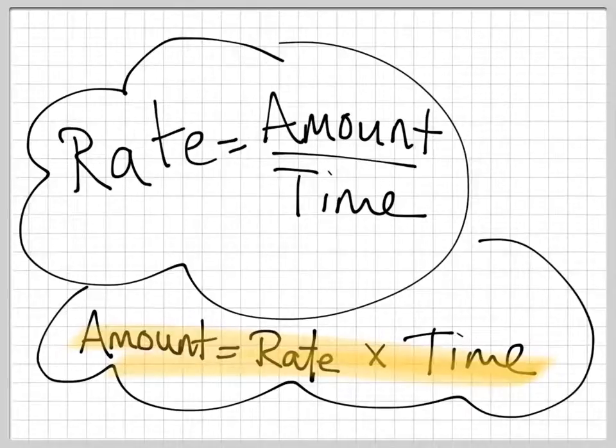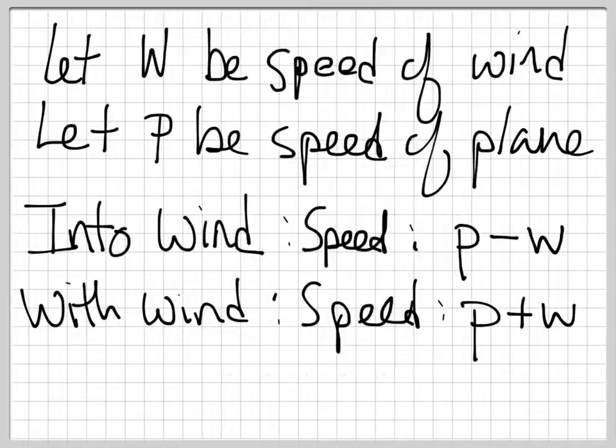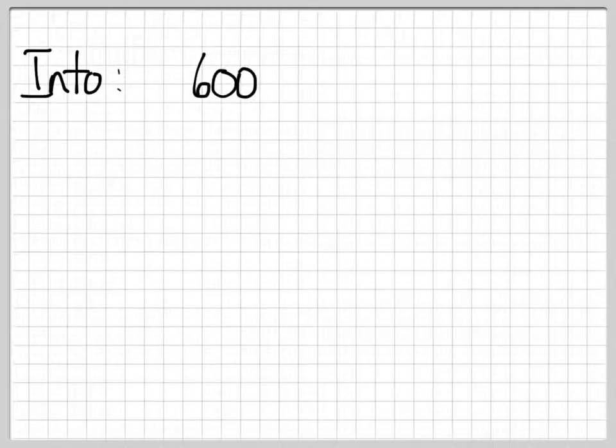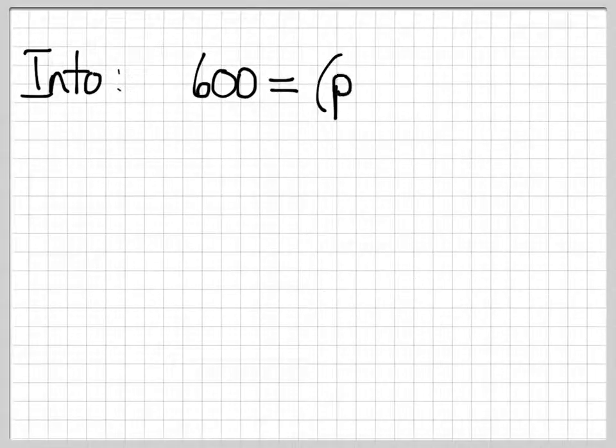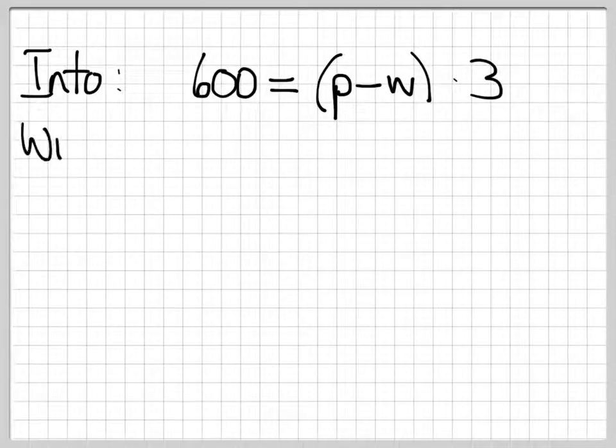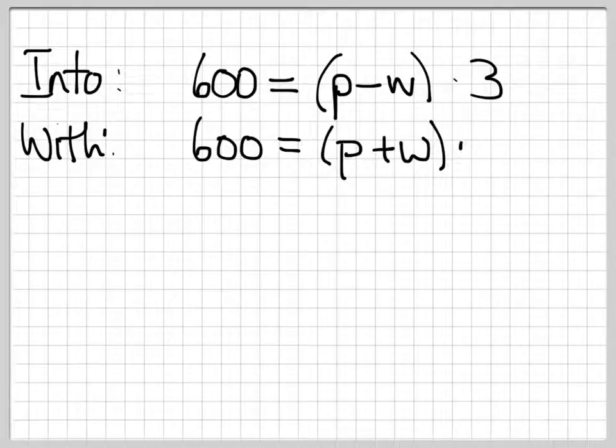And so we can come up with our equation. The amount is the rate times the time. So into the wind, 600 is the amount, the distance. And that equals p minus w times the time, which was 3 hours. With the wind, same 600 miles. And that was p plus w times 2.